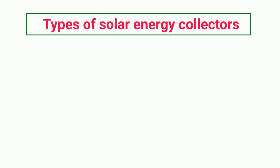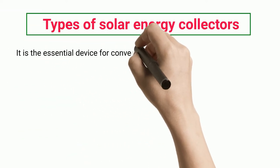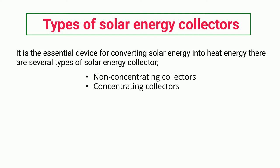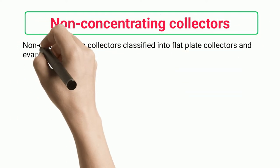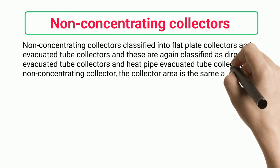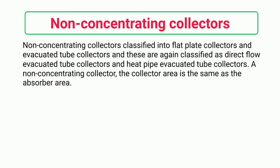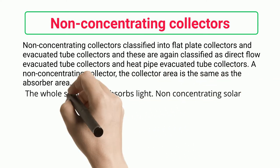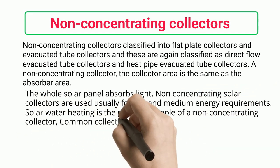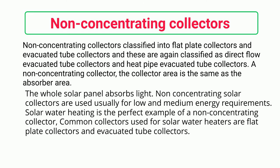Types of solar energy collectors: collectors are essential devices for converting solar energy into heat energy. There are two main categories: non-concentrating collectors and concentrating collectors. Non-concentrating collectors are classified into flat plate collectors and evacuated tube collectors, which are further classified as direct flow and heat pipe evacuated tube collectors. In a non-concentrating collector, the collector area equals the absorber area, and the whole solar panel absorbs light. These are used for low and medium energy requirements — solar water heating is a perfect example.